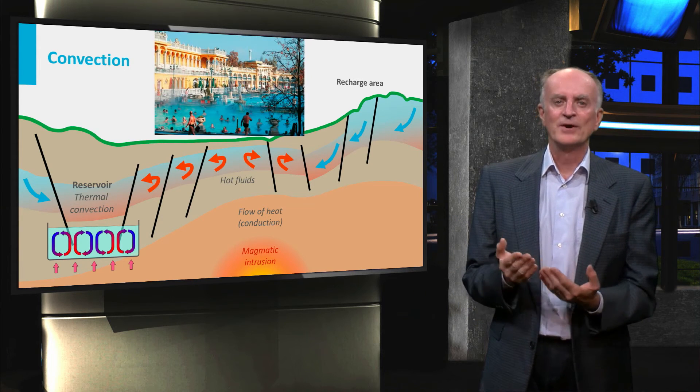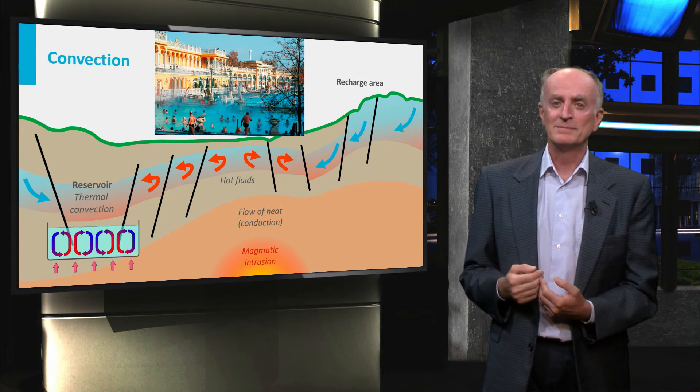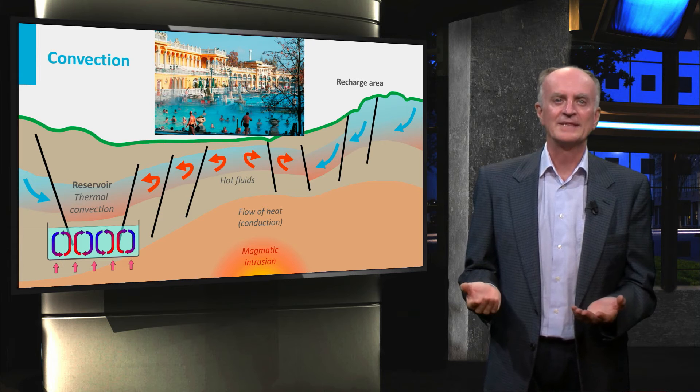If faults are present, then the hot water can travel along the related fracture zones and possibly reach the surface forming high temperature springs.